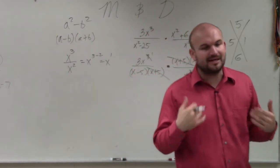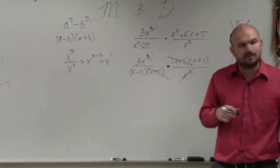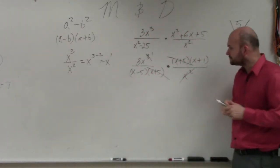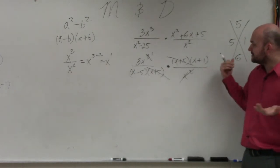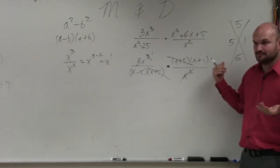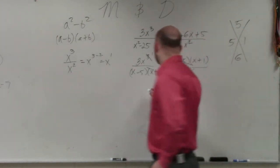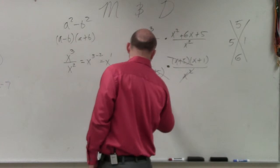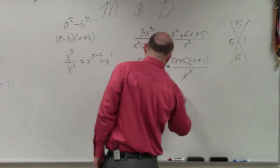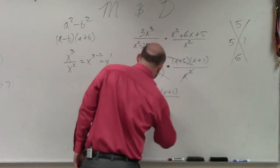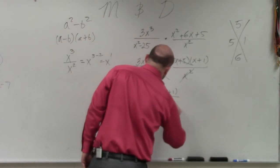Remember, when you're dividing, you subtract the powers. Is there anything else I can divide out? No. So therefore, my final answer is going to be 3x times (x plus 1) divided by (x minus 5).